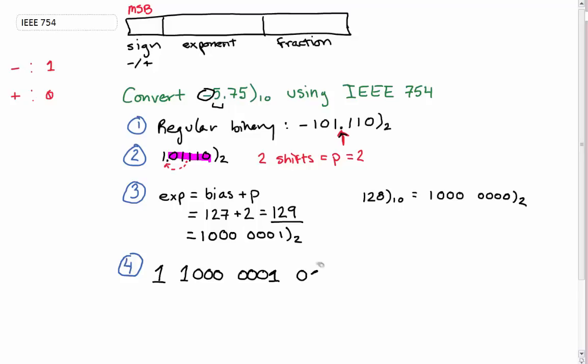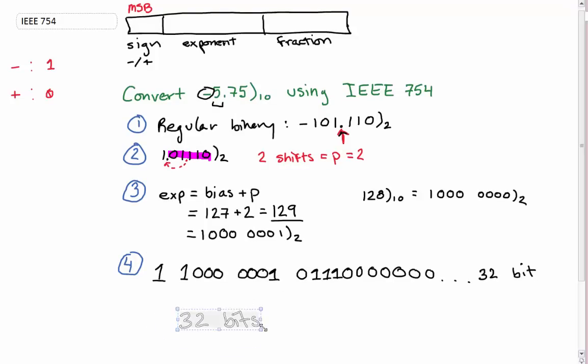So 01, we got three ones, and then a zero. Since we're doing it in single precision, this number has to be 32 bits in length. We don't have 32 bits, we've got 14 bits, so we have to add zeros until we hit our 32-bit mark. That is our final answer.